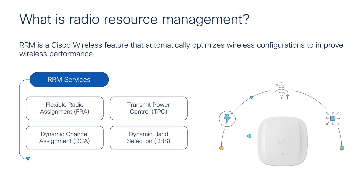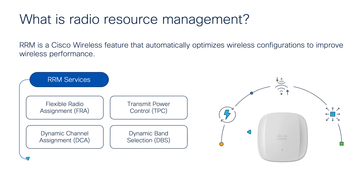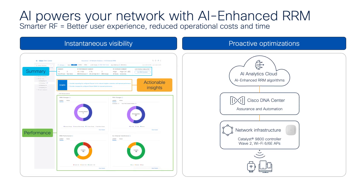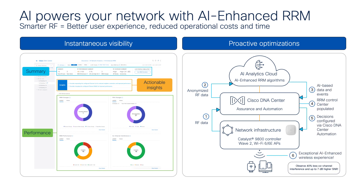Cisco's RRM (Radio Resource Management) software mitigates many of these issues by optimizing radio configurations across access points automatically. Cisco has introduced AI-enhanced RRM, a solution that leverages artificial intelligence to analyze more than 10 times the data of traditional RRM, making more sophisticated radio decisions and providing a seamless experience for users and visibility for admins.